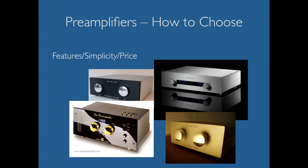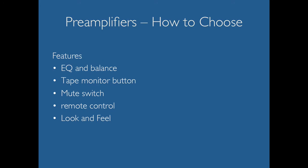When choosing a preamplifier, price is obviously a big part of it, but then there's the issue of features and simplicity. Some preamps are basically just a selector or source knob, or even just an input and output. The most common features included are EQ and balance, a tape monitor button, a mute switch, some have a remote control, and look and feel — whether the knob is nice and round or you control it via a remote.